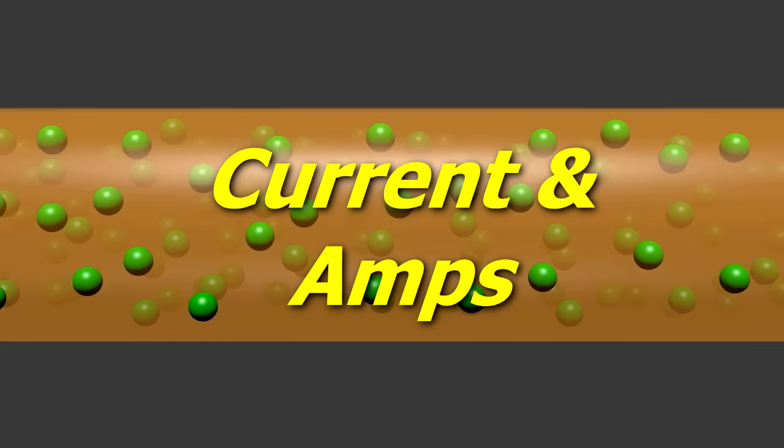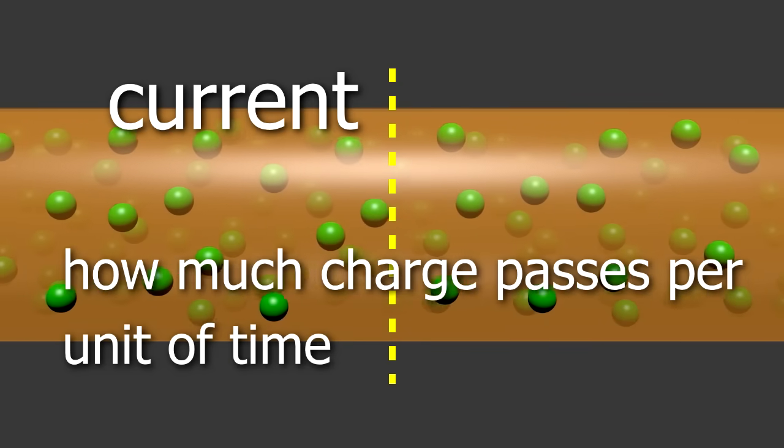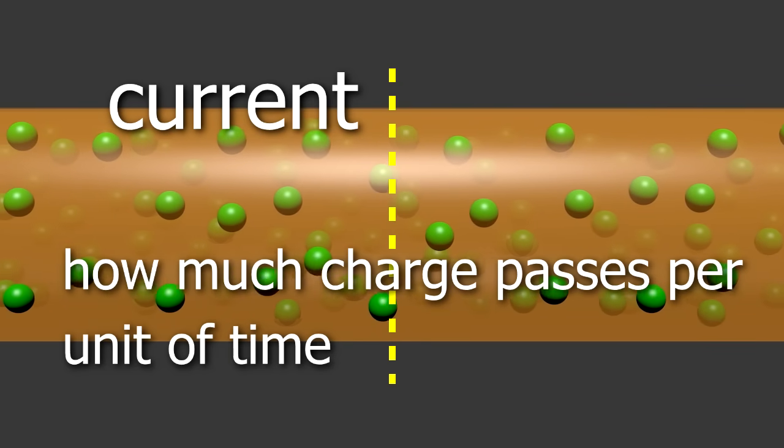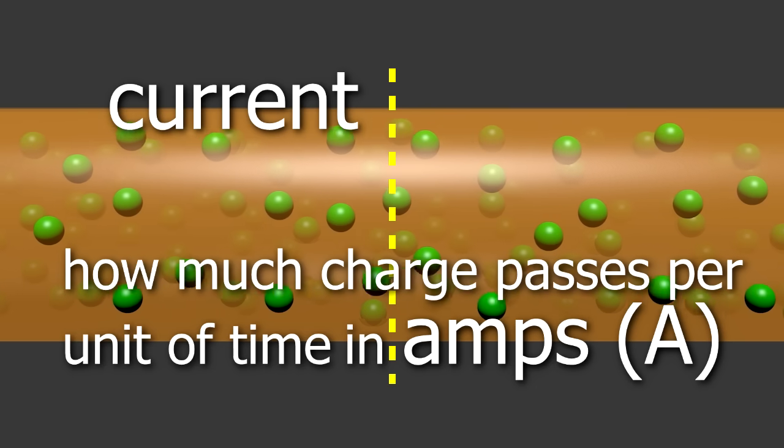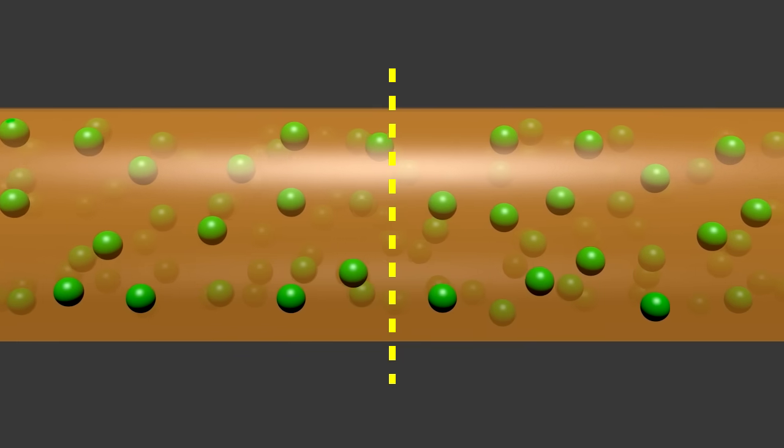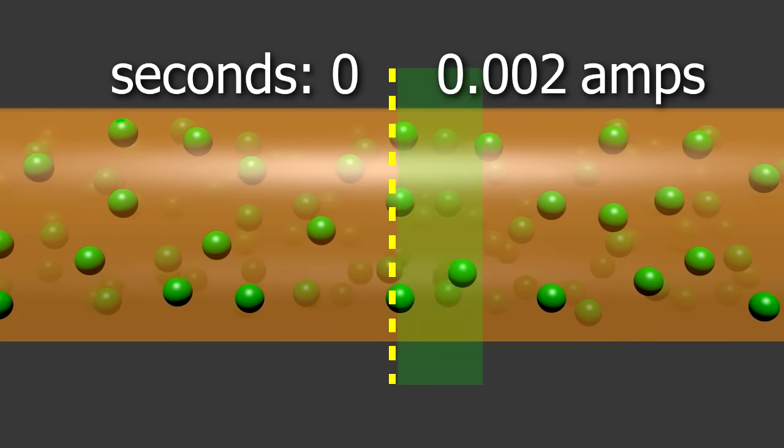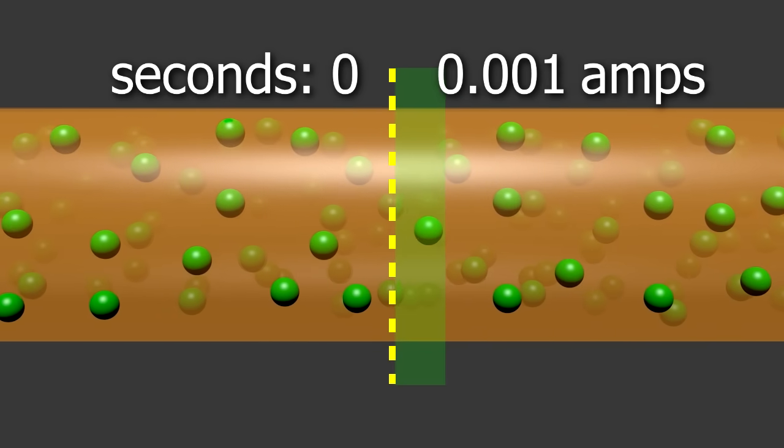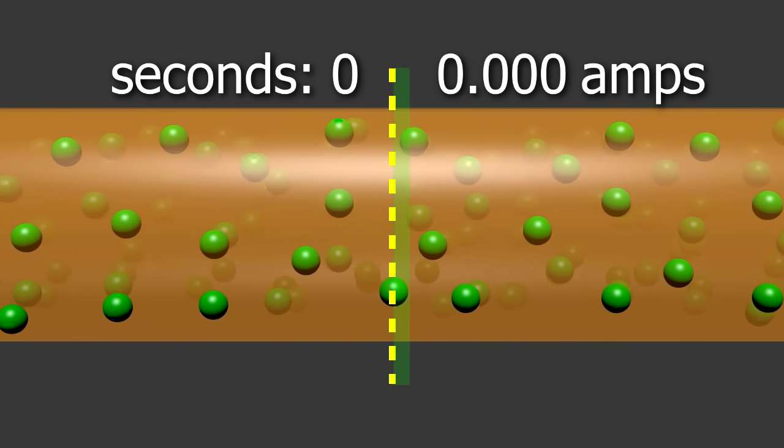What are current and amps? Current is just a measure of how much charge passes a point over a period of time. It's in units of amps. You can see negatively charged electrons. The amount of current, or amps, is the amount of the negative charge of the electrons passing this point every second.